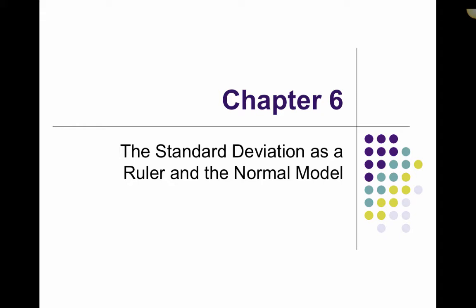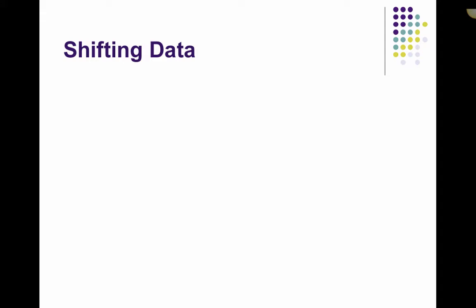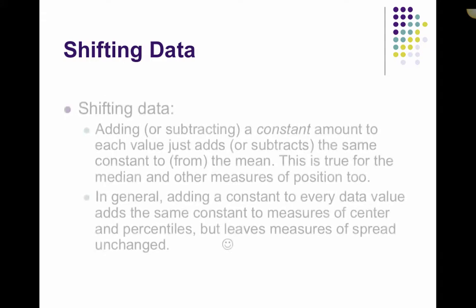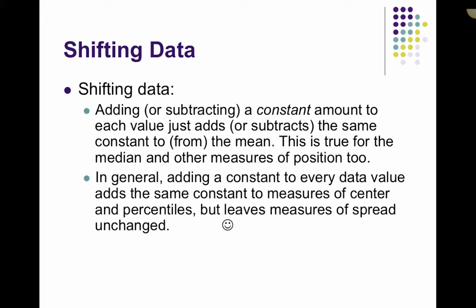Before we talk about either of those, we're going to talk about how we can alter data. The first way is by shifting data. Shifting data is just adding or subtracting a constant to each of your data values. All it does is add or subtract that same amount from any measure of position — by measure of position we mean like the center.